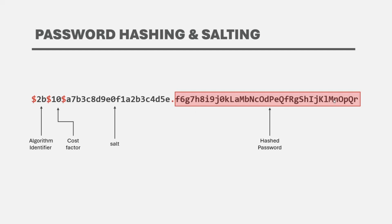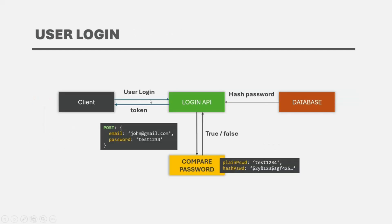Before we wrap up this lecture, let's see how the plain password provided during login will be compared with the hashed password saved in the database. When a user tries to login, they make a request to the login API providing their email or username and plain password. The login API will fetch the hashed password from the database for that user and then call a compare function, which will compare the plain password with the hashed password and return true or false. During the comparison, the plain password will first be converted to its hash and then compared with the stored hashed password. This works because the same input string always generates the same hashed string.